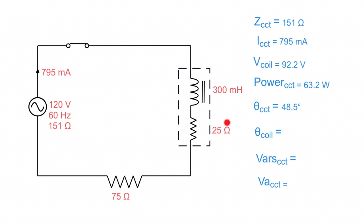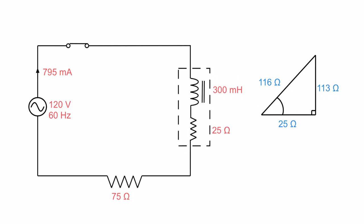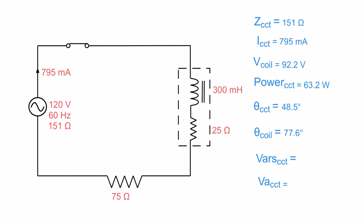Now we want the phase angle theta of the coil alone. Going back to the coil's impedance triangle: 25 ohms of coil resistance, 113 ohms of reactance, giving 116 ohms of coil impedance. Using inverse cosine of 25 divided by 116, we get 77.6 degrees — that is the theta for the coil alone.